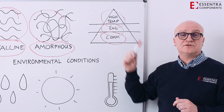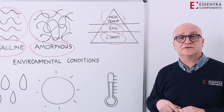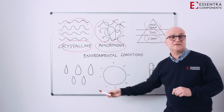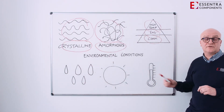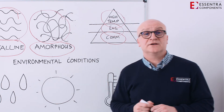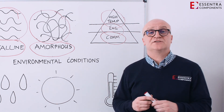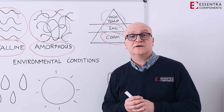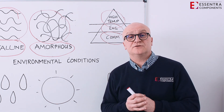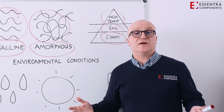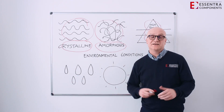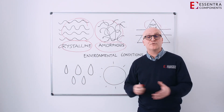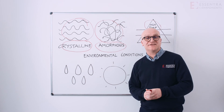To summarize: if we take into account the structure of the material, the type of material we're going to be using suitable for our application, the environment, and the conditions that the component is going to be exposed to — this helps us make the correct selection of the polymer we're going to use to make our parts. Thank you for watching, and I look forward to seeing you again next time.